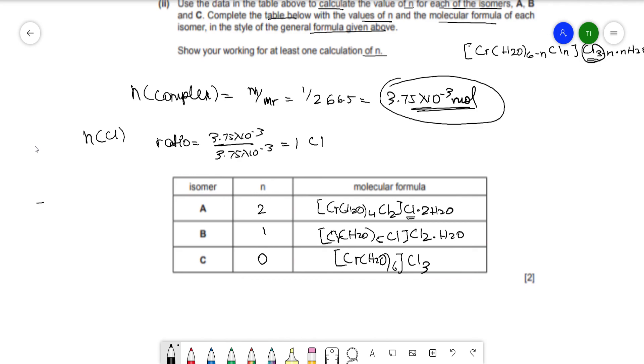Similarly, if the moles was 7.5 × 10⁻³ divided by 3.75 × 10⁻³, it's basically double of this, so it would be 2. So that means 2 Cl on the outside that reacts with the AgNO3 solution. So over here, there would be 2 Cl. And similarly, for C, you do the same thing and you'd get 3 Cl.